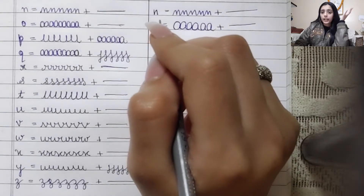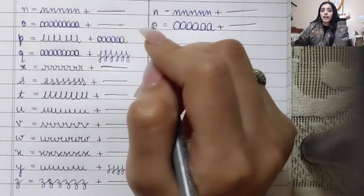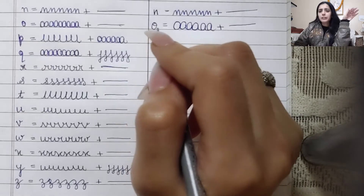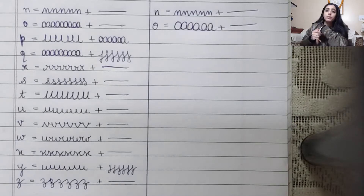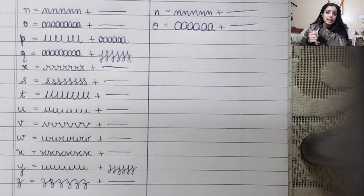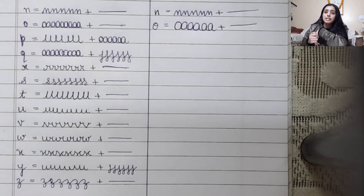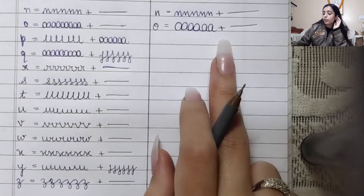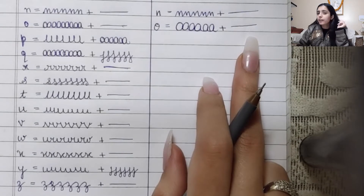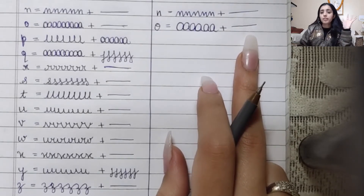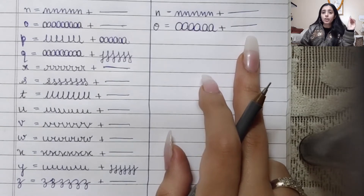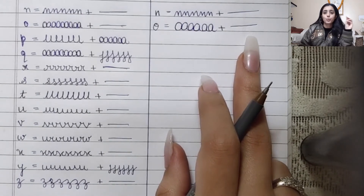As I told you in the previous video, practicing in a straight line is very important. Your handwriting should not be going up and down — that doesn't look nice and does not represent good handwriting. We need to make sure we practice all the alphabets in a very straight line. It doesn't mean just the alphabet in front of me goes straight; every alphabet must go in a straight line. It's very, very important.